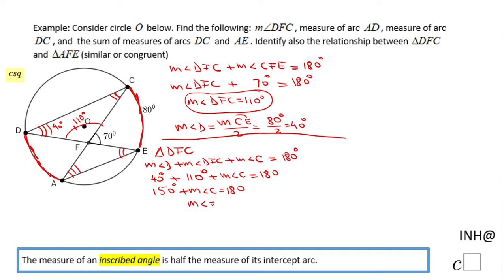Now we can find the measure of arc AD because the measure of angle C is half of the measure of arc AD, and angle C is 30 degrees. So to find the measure of arc AD, we double angle C, and the measure of arc AD will be 60 degrees.